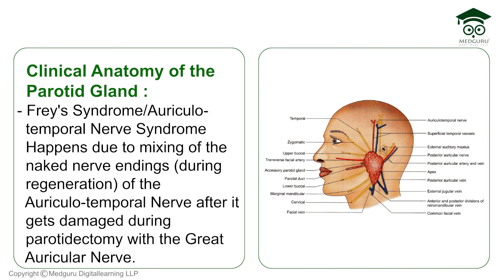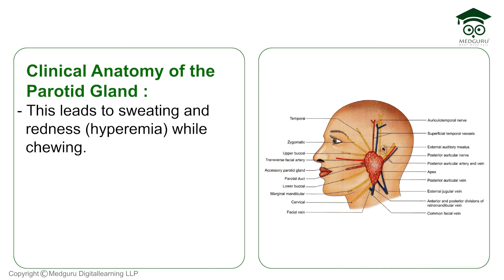Frey's syndrome, also called auriculotemporal syndrome, occurs when there is damage followed by regeneration of the auriculotemporal nerve (deep) and the great auricular nerve (superficial, supplying skin). Their fibers become mixed, so whenever chewing stimulates the auriculotemporal nerve, it cross-stimulates the great auricular nerve supplying the skin, causing hyperemia, sweating, and redness in the area overlying the parotid gland.